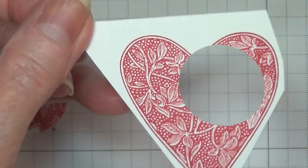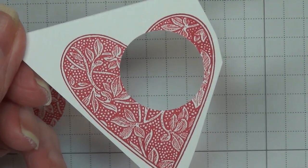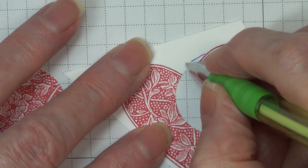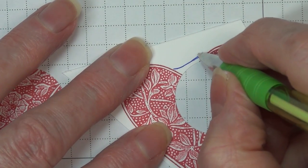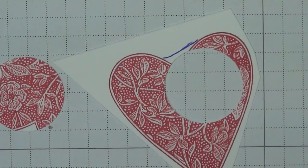Instead of you watching me trim around this, I'm drawing this to give you an idea. You want to have a little bridge there so that you have some stability when you're gluing this on. Trim around it.